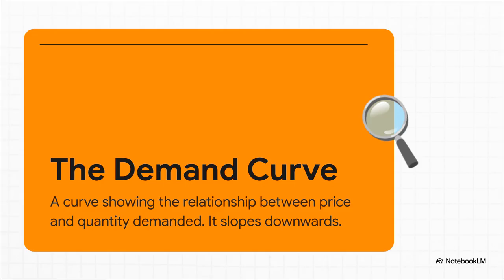So what happens if we take those numbers from the table and actually plot them on a graph? That's when we get what's called the demand curve — a really simple but incredibly powerful visual. Just picture a line that slopes downwards from left to right. That's it. It perfectly shows that fundamental rule of economics: as the price of something drops, the amount people want to buy goes up.